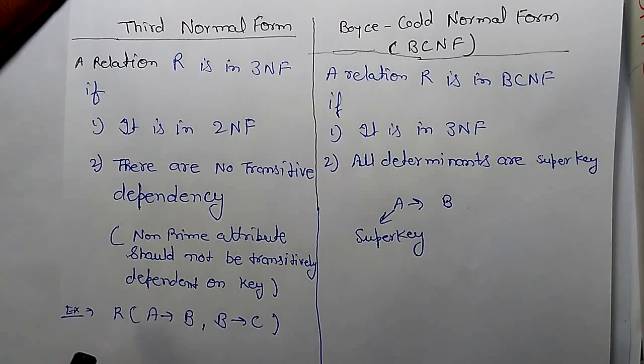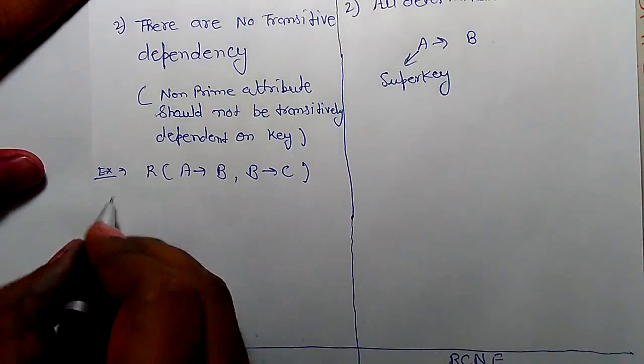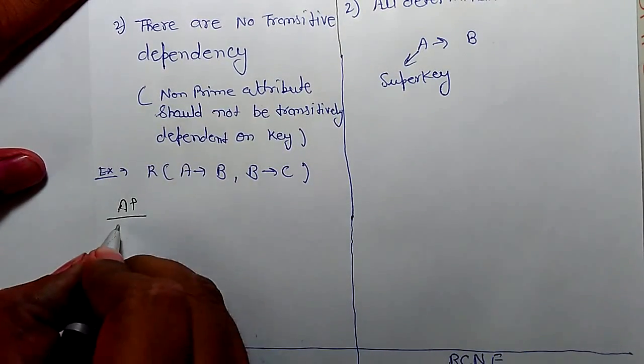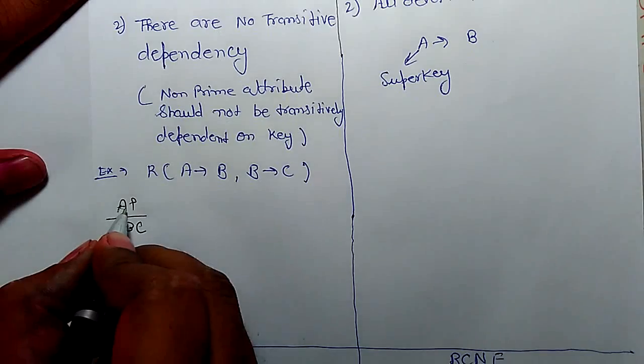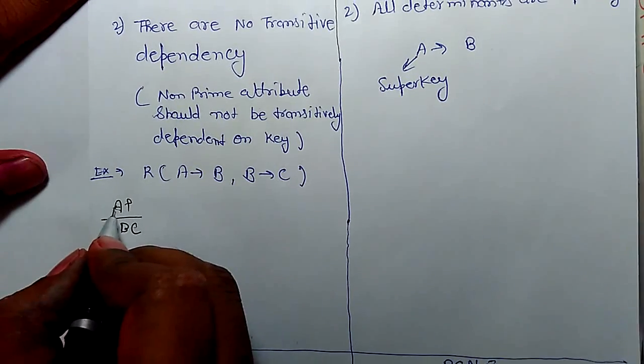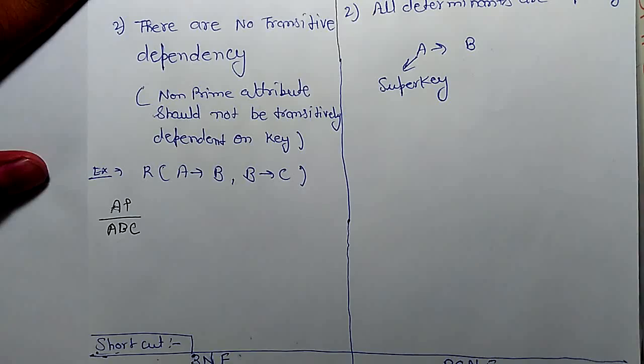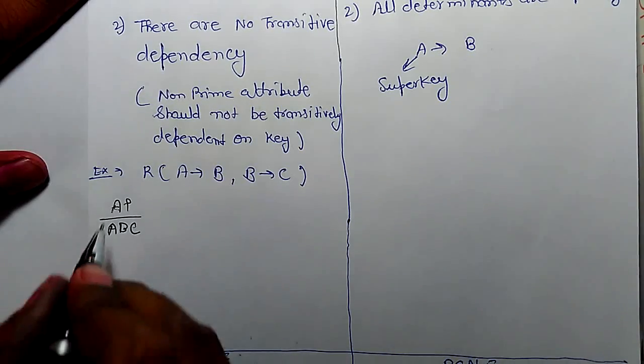Let's take one example. A relation R, A determines B and B function determines C. So this relation is in 2NF. The definition of 2NF is fully functional dependency. A is a key if we find the key in this relation. A closure A drive A, A drive B and B drive C so A closure has A, B, C. So A can determine A, B, C so A is a key.